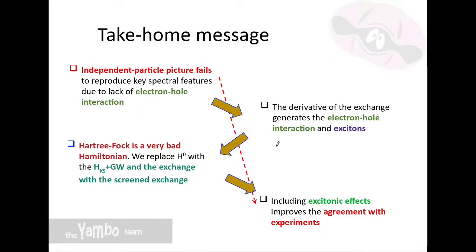To conclude: the independent particle picture fails to describe optical excitations in solids and nanostructures, even when including time-dependent Hartree or shifting the gap with GW. You need the electron-hole interaction, and the term generating this interaction is the derivative of the exchange. Starting from Hartree-Fock is a bad idea because it gives too large a band gap and too strong excitonic binding energy. Instead, we replace the Hartree-Fock Hamiltonian with Kohn-Sham plus GW-shifted eigenvalues, and replace the bare exchange with screened exchange. Together, this gives a good description of excitonic effects and very good agreement with experiment.